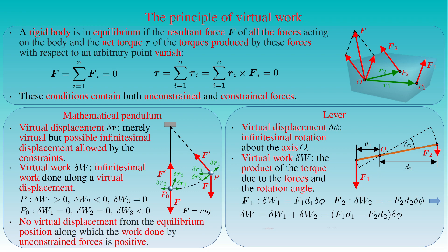If the lever is in equilibrium — that is, the forces are in balance and the net torque vanishes — then F1 times D1 equals F2 times D2. As a result, the virtual work delta W equals zero, which corresponds to F1·D1 = F2·D2, giving a vanishing net torque.